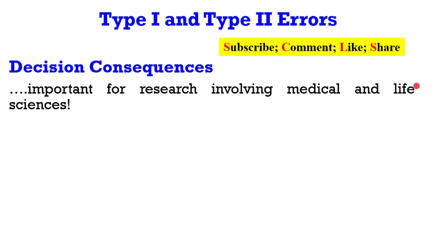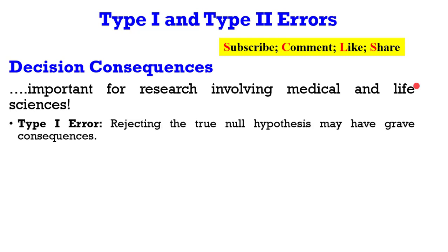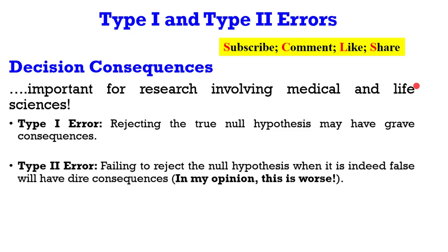What will be the decision consequences? This is actually important for research involving medicine and life sciences. For type 1 error, when the true null hypothesis is rejected, it will lead to grave consequences. For type 2 error, failure to reject the null hypothesis when it is indeed false will have dire consequences. In my opinion, committing a type 2 error is worse, but I leave it to my audience to take their own positions.